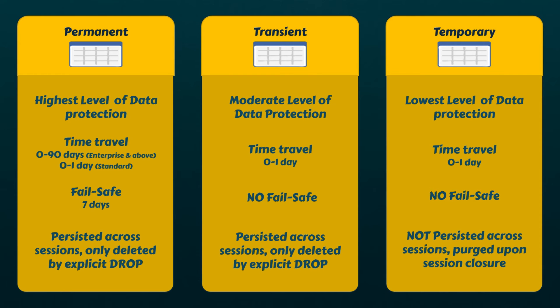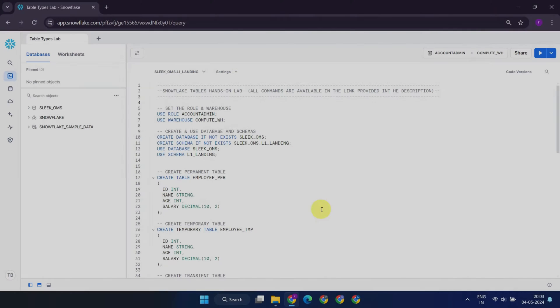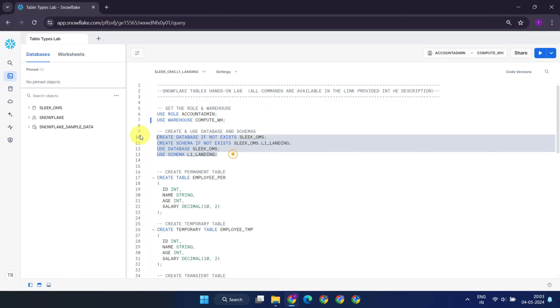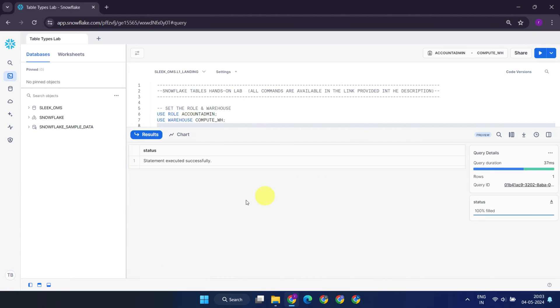Now that we've a fair understanding of these three table types, it's time to see them in action within the Snowflake environment. Let's first get our lab setup ready. We'll start by executing use statements with the appropriate warehouse and role. Then, we'll create and use the database and schema as necessary.